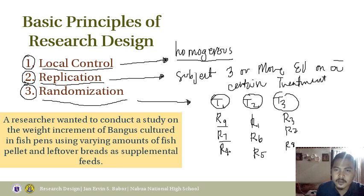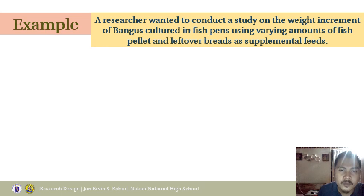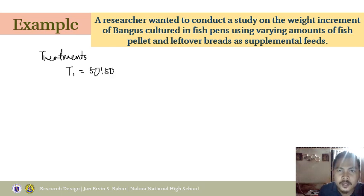There are three replicates for each treatment as a minimum. For example, suppose a researcher wanted to conduct a study on the weight increment of bangus cultured in fishpens using varying amounts of fish pellet and leftover breads as supplemental feeds. Let's say you have four treatments. T1 is 50-50: 50% fish pellet and 50% leftover breads. T2 is 75-25: 75% fish pellet and 25% leftover bread.